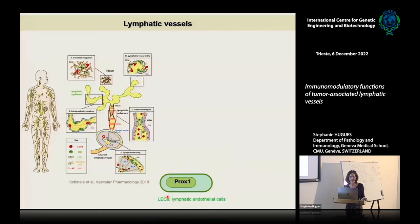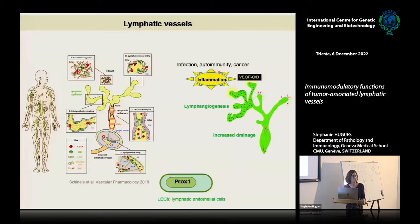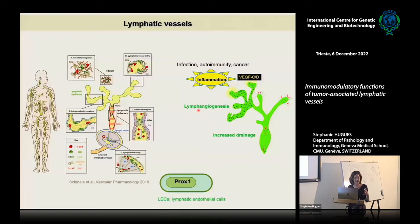This is the steady state, but upon inflammation in the peripheral tissue — which can be an infection, autoimmunity, or cancer — there will be release in the inflamed tissue of lymphangiogenic factors, mainly VEGFC and VEGFD. This release will induce the process called lymphangiogenesis, which consists in the expansion of lymphatic endothelial cells and the enlargement of the lymphatic vasculature associated to the inflamed tissue.